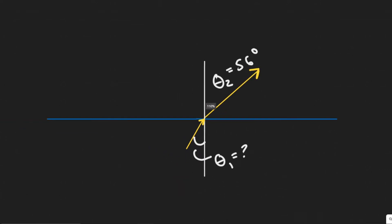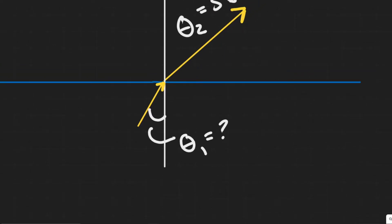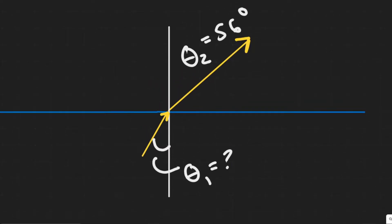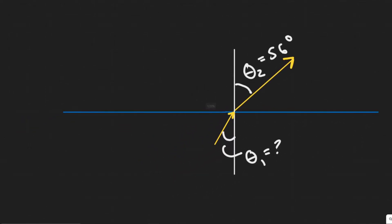As always, you want to draw what's going on here. We can imagine this is our light beam being shined from underwater. It's going to go through and bend as a result of Snell's Law, creating a new angle which we call theta2. We know it goes from water into air, and it bends due to the changing index of refraction.